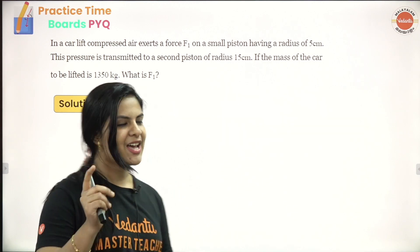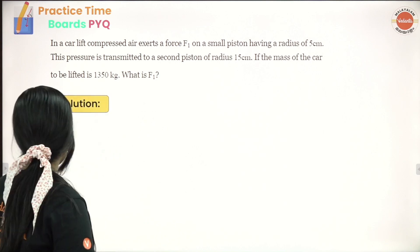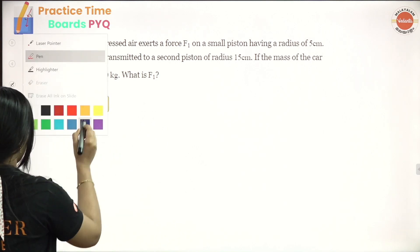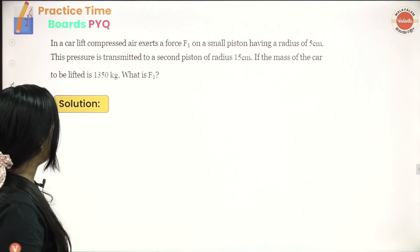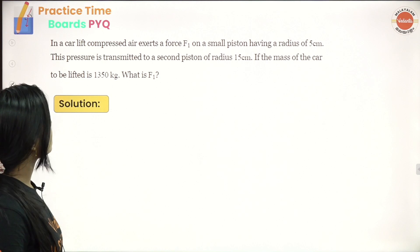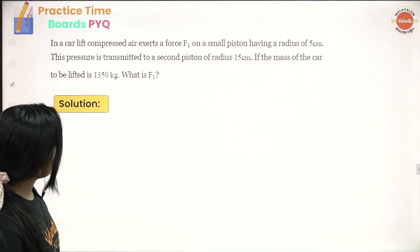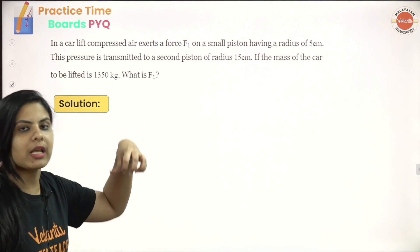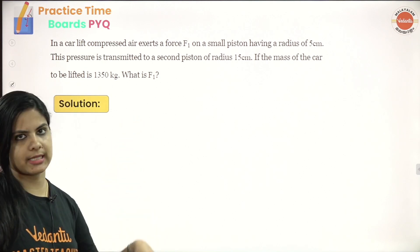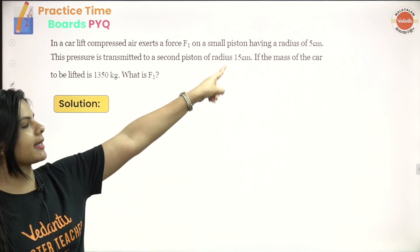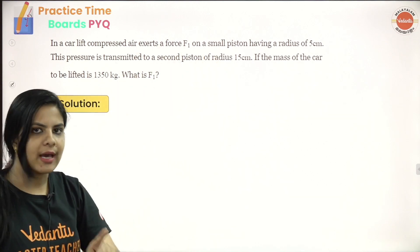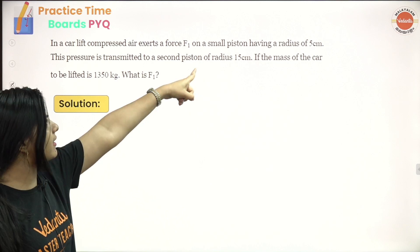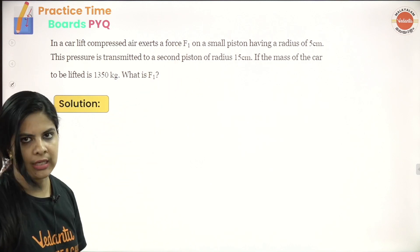We are going to discuss three problems. Let's go to the first problem. In a car lift, compressed air exerts a force F1 on a small piston with a radius of 5 cm. What is the force on the small piston, F1?